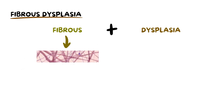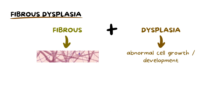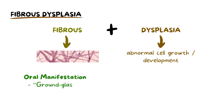The word fibrous refers to connective tissue, and dysplasia usually refers to the presence of abnormal cells or tissues. Thus, fibrous dysplasia is a rare bone disorder characterized by the replacement of normal bone with fibrous connective tissue. This condition can manifest in the jaws with a distinct ground glass radiographic appearance.